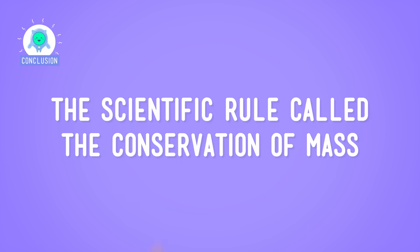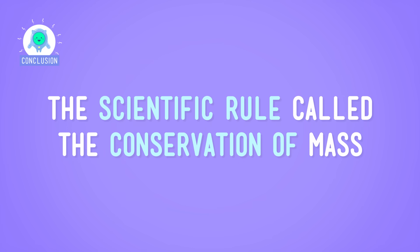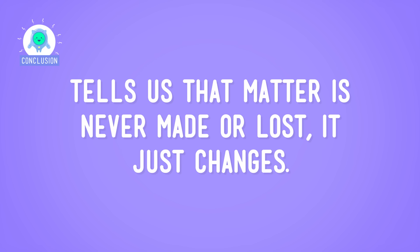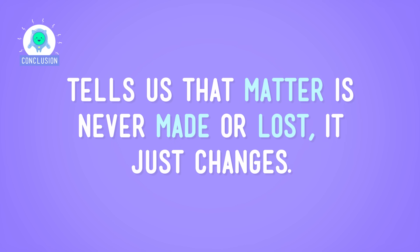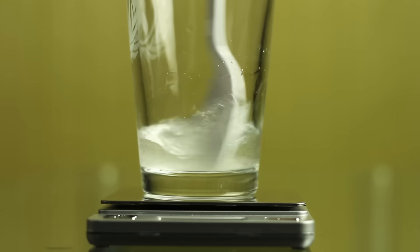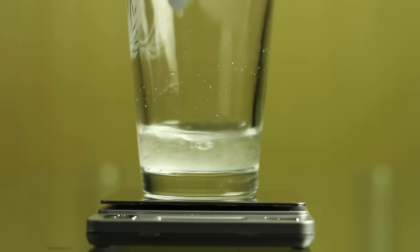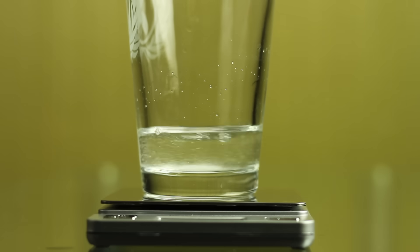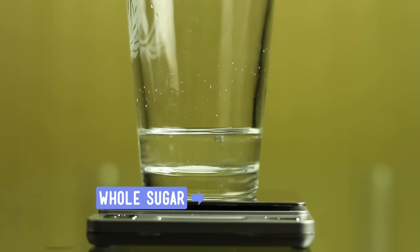So the scientific rule called the conservation of mass tells us that matter is never made or lost — it just changes. We showed this by creating physical changes, in which matter just changes its form, in this case whole sugar into dissolved sugar. The conservation of mass also applies in chemical changes too, in which a new substance is made, but that's a topic for another day. See you next time!